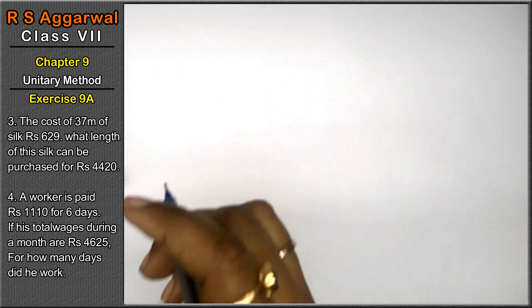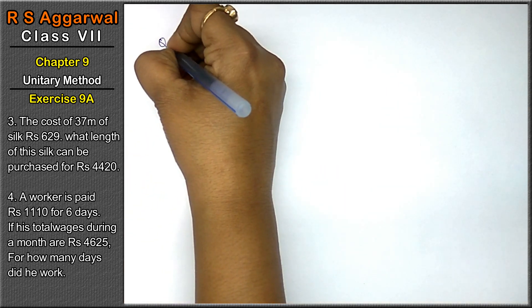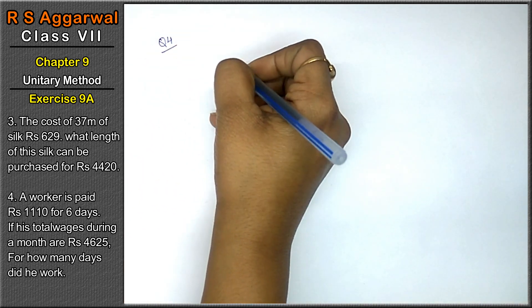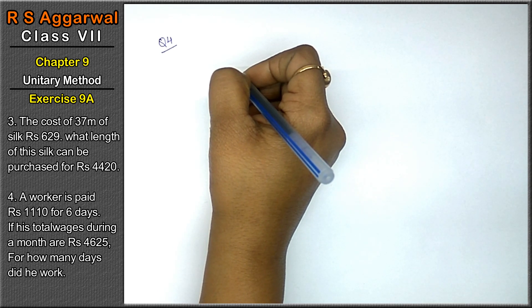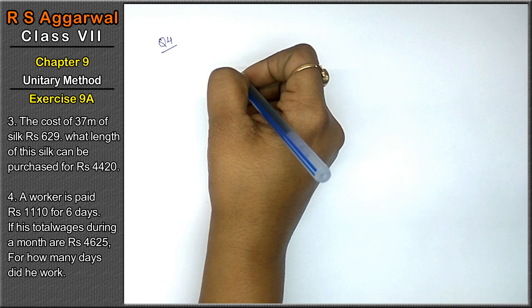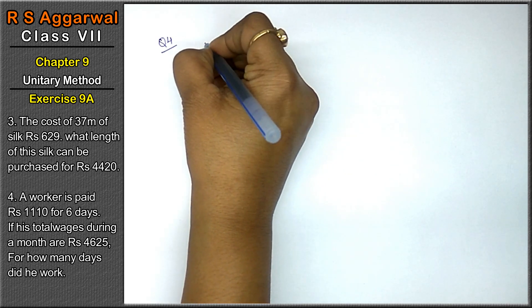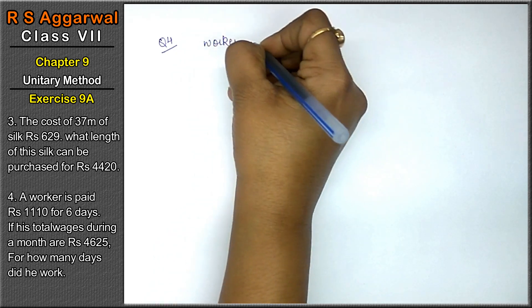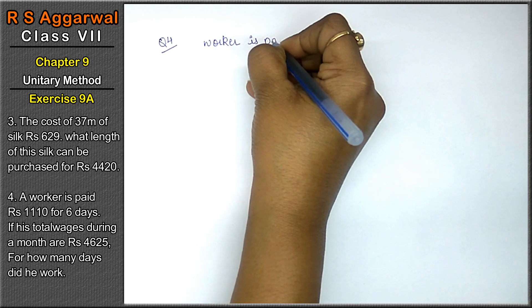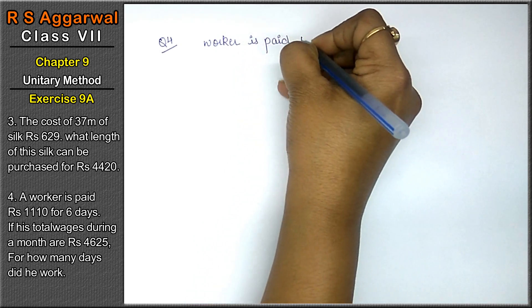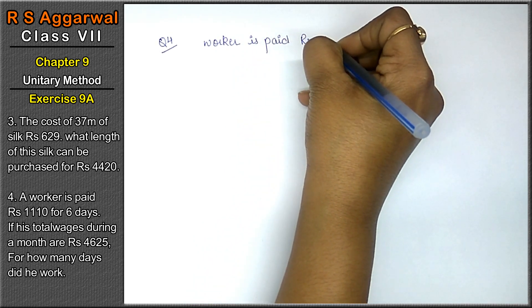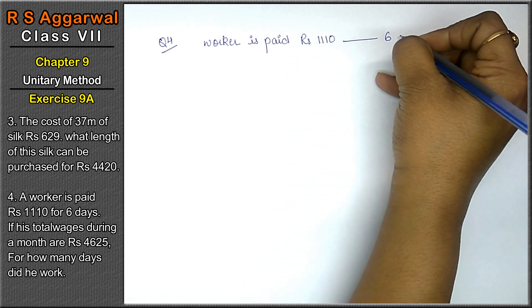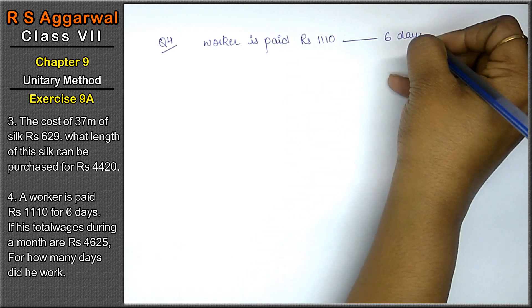Let's do question number 4 of chapter unitary method that is exercise 9A. Question number 4 is, a worker is paid rupees 1110 for 6 days. Right friends?